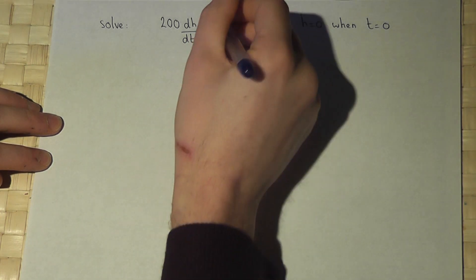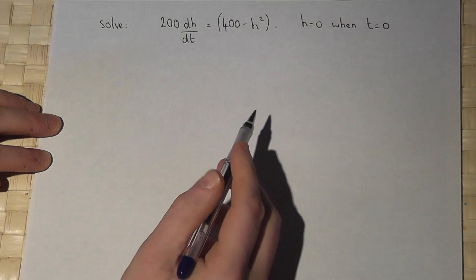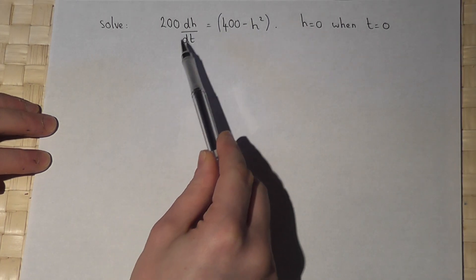I begin by putting a bracket around the right hand side and I want to get the h's to the left and the t's to the right.